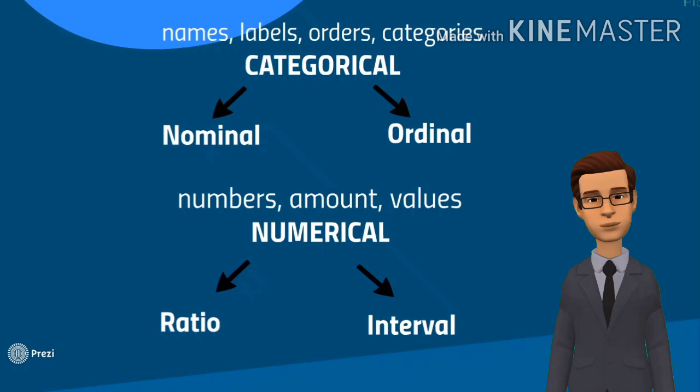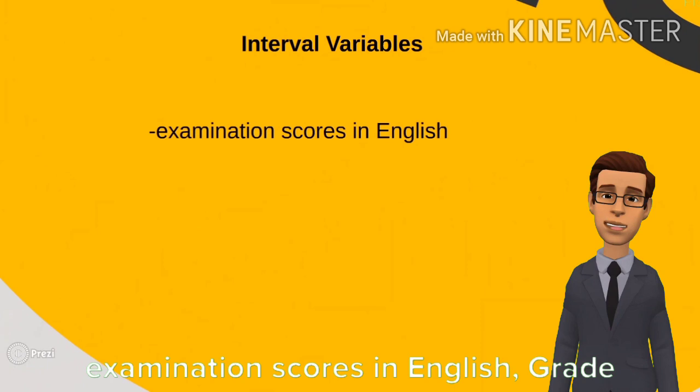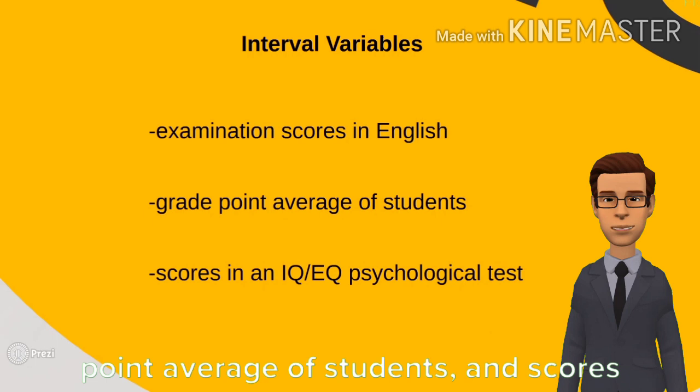Examples of interval variables are examination scores in English, grade point average of students, and scores in an IQ-EQ psychological test.